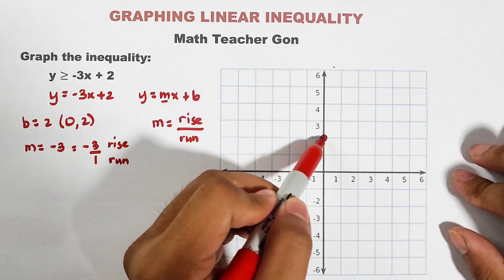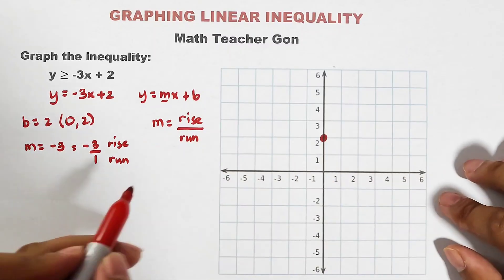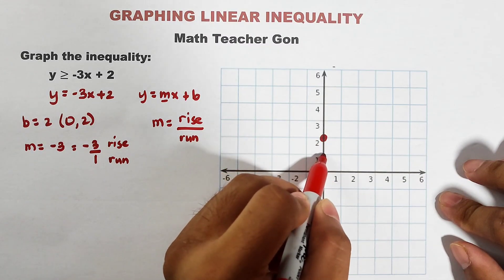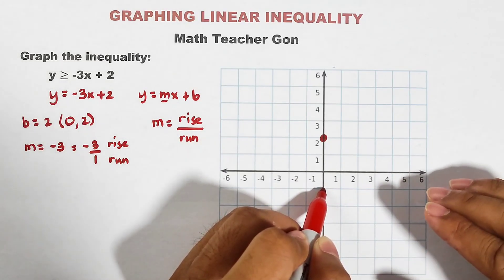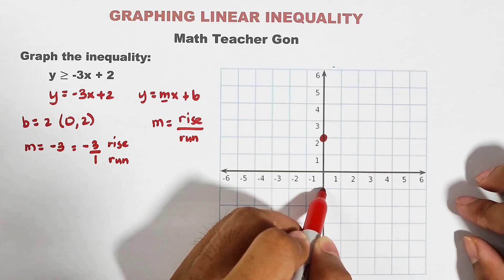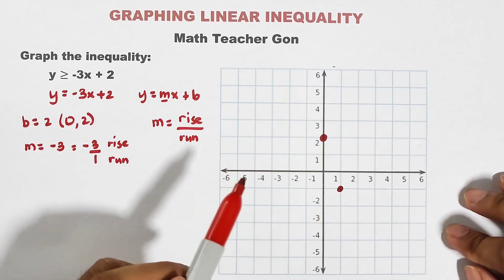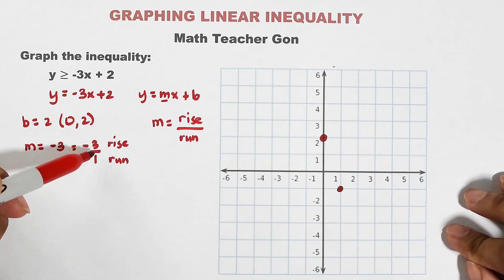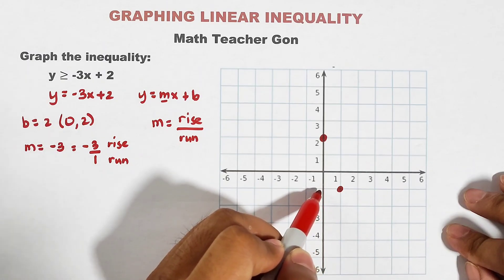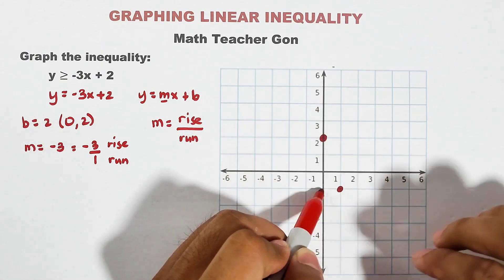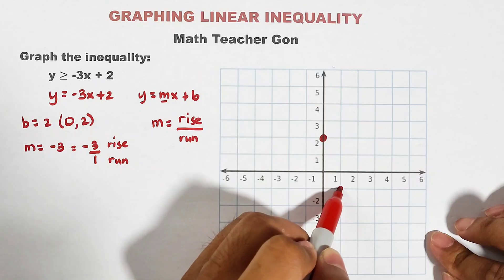Since the rise is equal to negative 3, from the first point we will go down 3 units because the value of rise is negative: 1, 2, and 3. And for the run, since the value is positive, we go to the right 1 unit. This is now the second point. From the first point, we move 3 units downward because rise is negative 3, then 1 unit to the right because run is positive 1. This is the location of the second point.